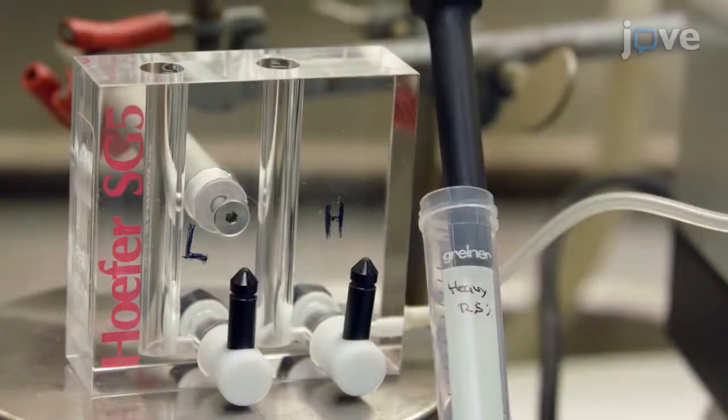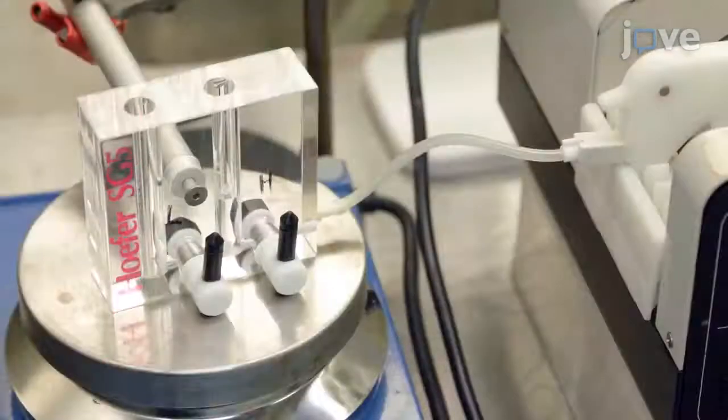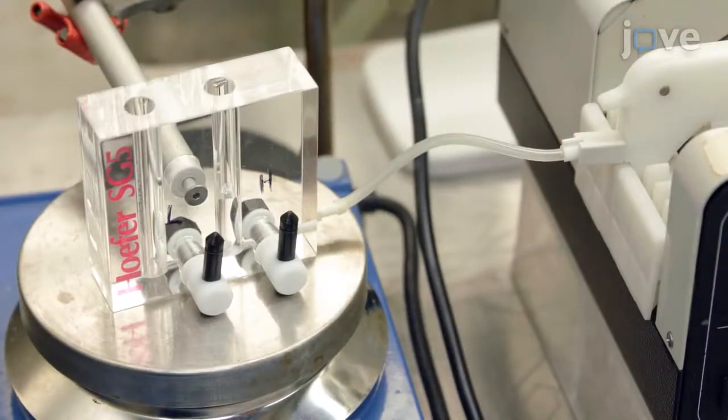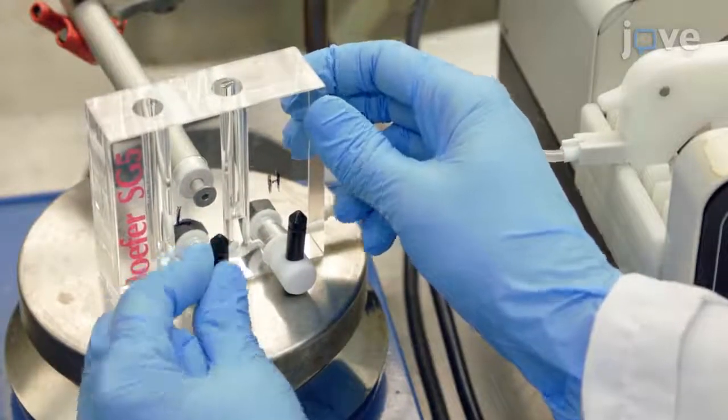Pipet the 12.5% solution to the heavy chamber. Remove air bubbles from the channel connecting the light and heavy chambers by opening the valve connecting the two chambers, allowing solution to enter the light chamber.